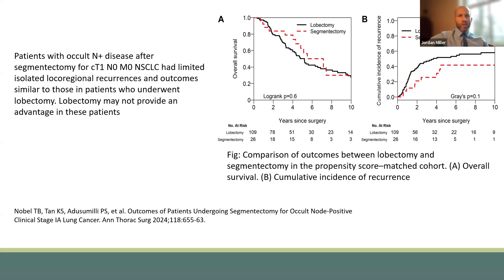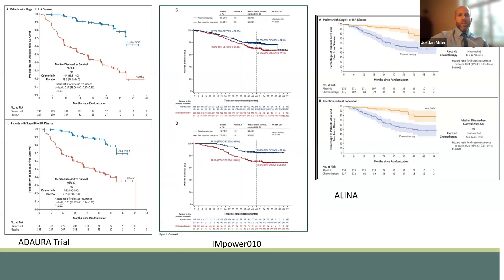Additionally, this is another study published in the Annals of Thoracic Surgery recently, and this demonstrated that patients with occult node-positive disease after segmentectomy for clinical T1N0 non-small cell lung cancer had limited isolated local-regional recurrence and that those outcomes were similar to patients who underwent lobectomy. The conclusion of this trial demonstrated that lobectomy may not provide a survival advantage in patients with occult nodal disease. Once occult nodal disease has been discovered, whether at the time of sublobar resection or lobectomy, patients should be discussed in a multidisciplinary fashion for consideration of adjuvant therapy.